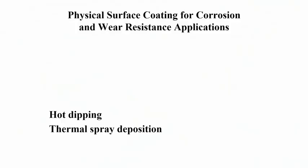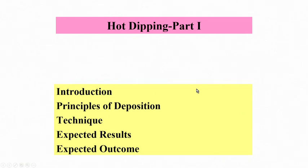Hello. In this series of talks we will discuss surface engineering techniques for wear and corrosion resistance applications, which are mainly based on hot dipping and thermal spray deposition. This will fall under lecture number 39 to lecture number 44. First, going to the hot dipping process, we will discuss a brief introduction, then the principles of deposition, the different techniques applied, and the different outcomes for different materials coated by hot dipping technique.